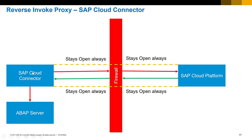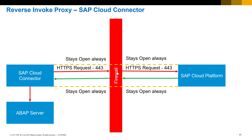The SAP Cloud Connector can reside on the DMZ or on the internal network — it doesn't matter, it's based on the company's decision. The prerequisites are: it needs to be able to talk to SAP Cloud Platform on port 443, which is open on most company firewalls, so no firewall modifications are required. It also needs to be able to talk to the back-end resources to handle requests from the SAP Cloud Platform. A key thing to understand is no inbound port needs to be open for this to work.